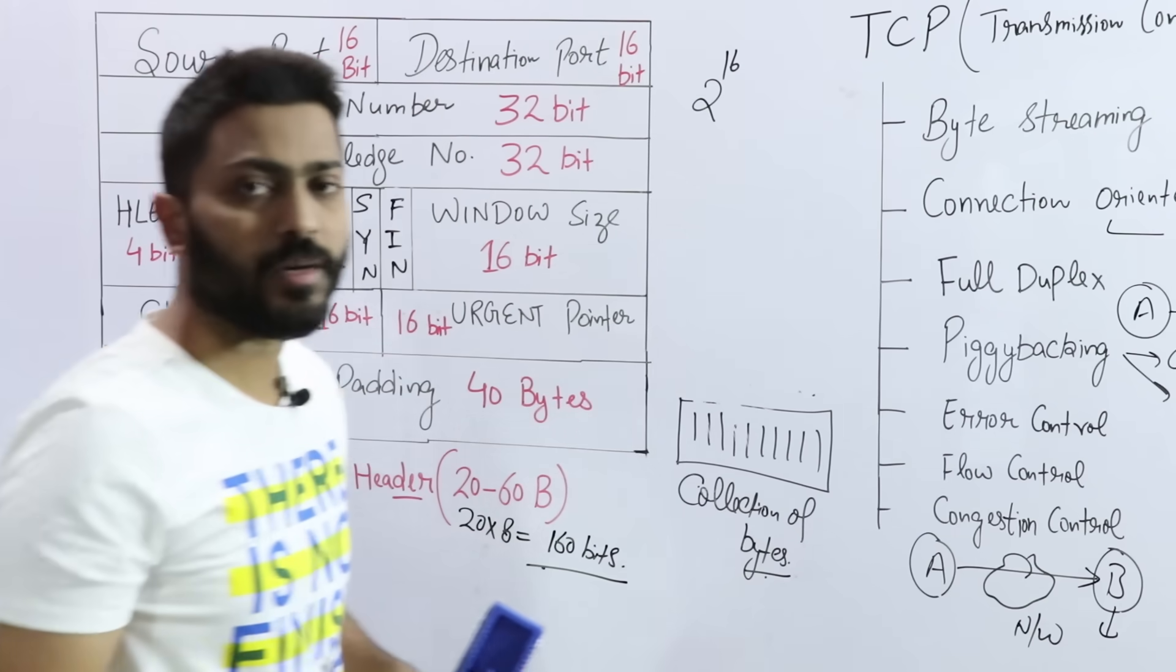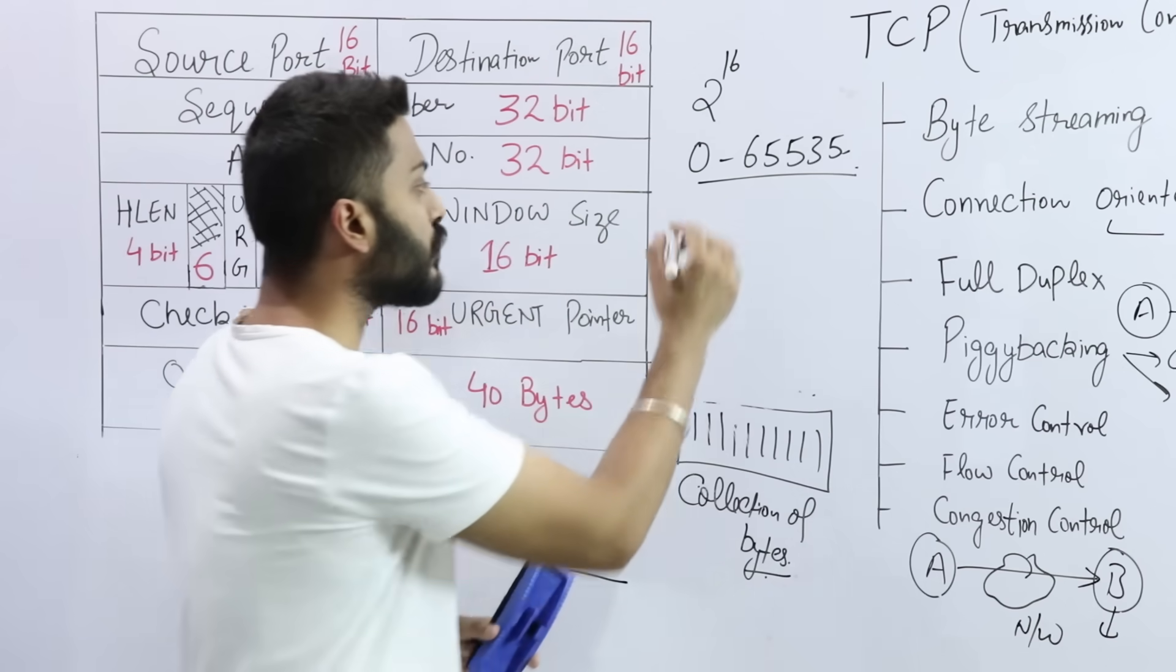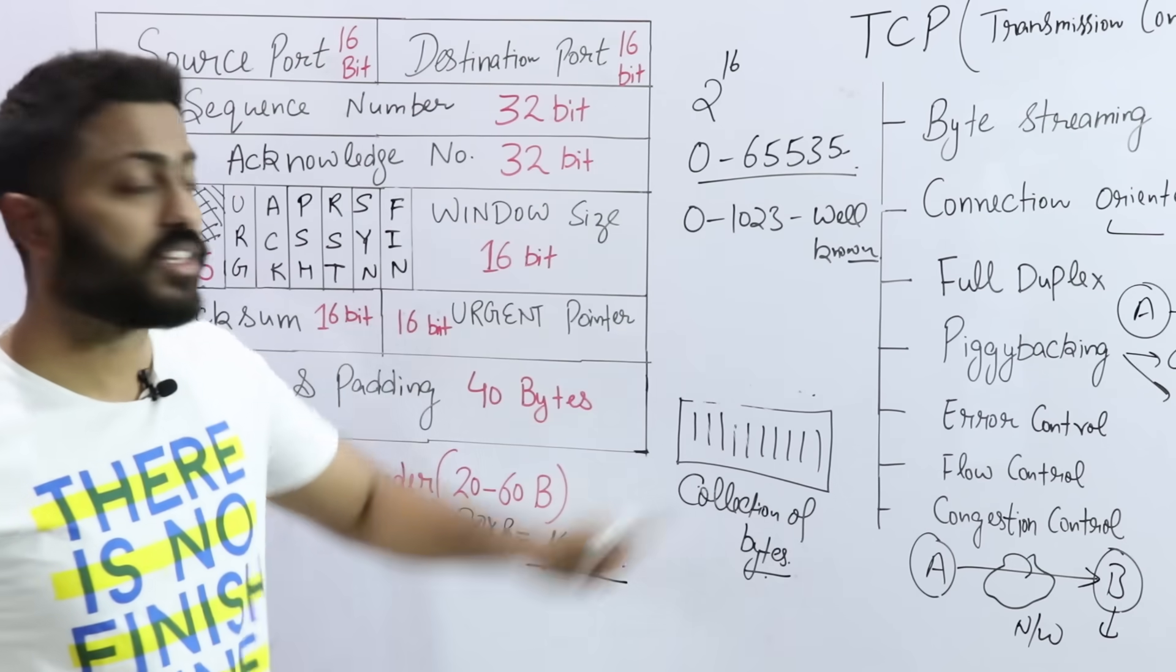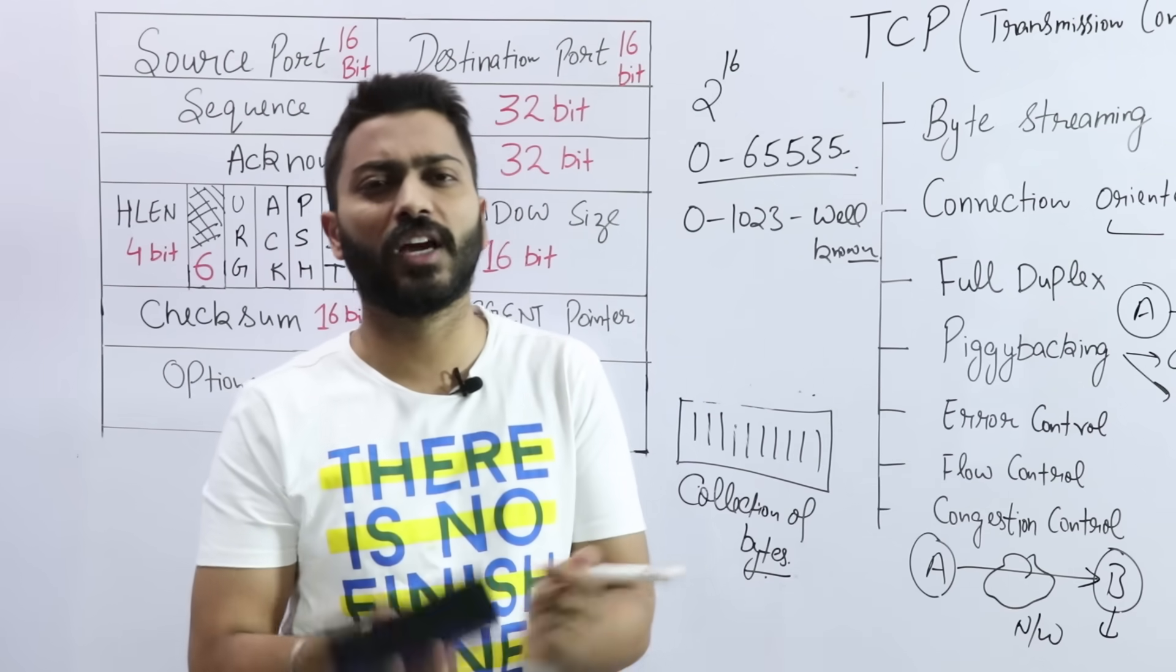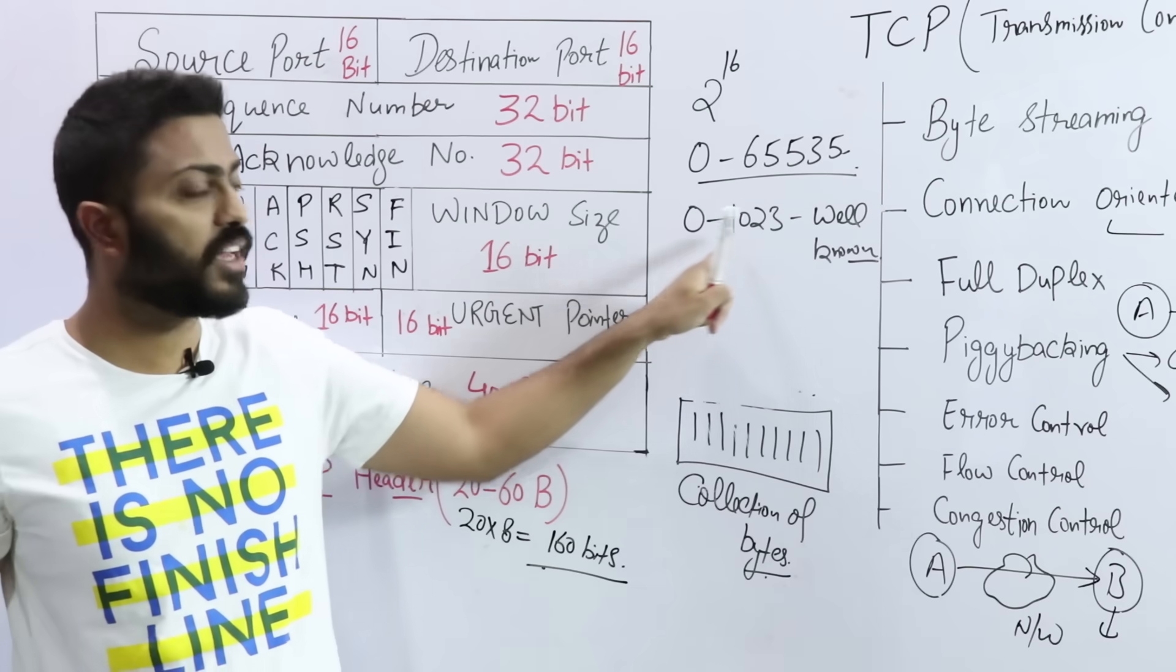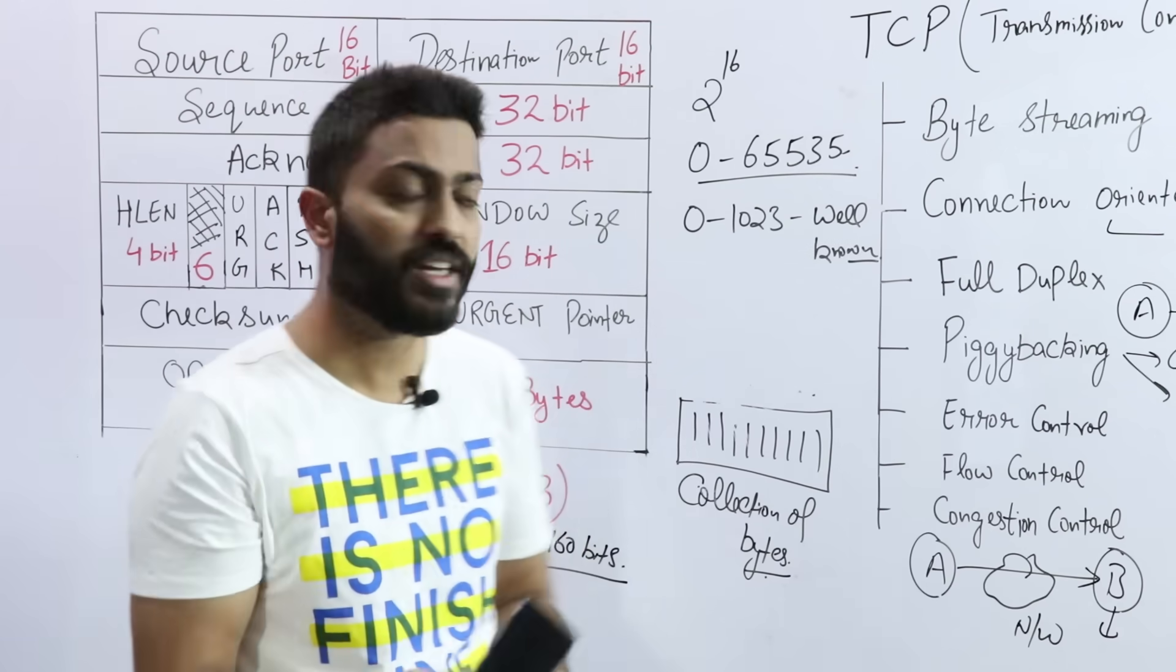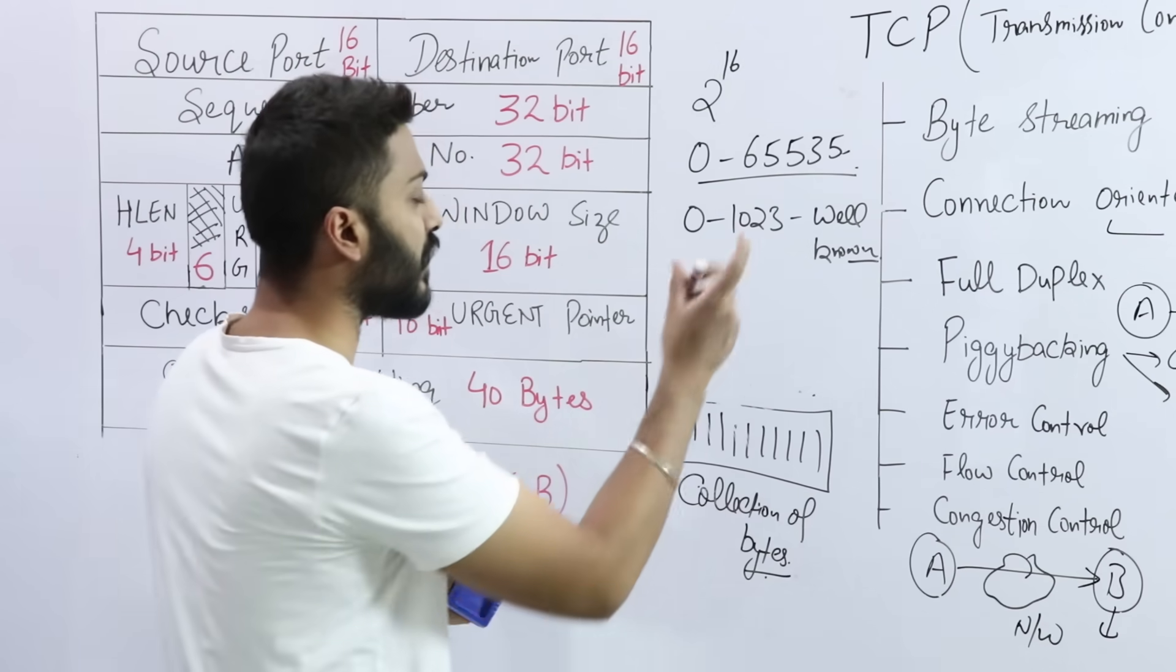Here 16-bit port number, 16-bit means 2 to the power 16 possible numbers. That is 0 to 65535. We can have numbers for ports. But out of these, 0 to 1023, these are called well-known port numbers. Well-known port numbers means these are used by standard applications. Like HTTP uses port number 80, Simple Mail Transfer Protocol uses port 25, FTP uses 21. Different standard applications which are used in network use ports in this range. These are well-known.